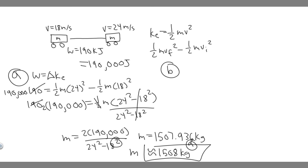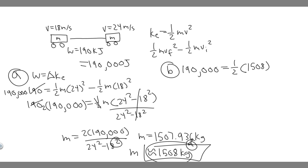Now for Part B — what they're trying to find is the speed of the car when its kinetic energy is equal to 190 kilojoules. We know kinetic energy equals one-half mv squared, and we're solving for v when KE is 190 kilojoules, which is 190,000 joules. So we say 190,000 equals one-half times the mass of the car, which is 1,508, times v squared. Multiplying both sides by 2 gives 2 times 190,000 equals 1,508 times v squared.